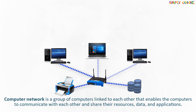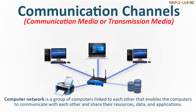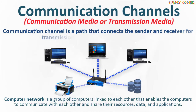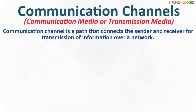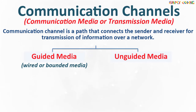These computers are linked to each other with different types of communication channels. These communication channels are also known as communication media or transmission media, and it is a path that connects the sender and receiver for transmission of information over a network. At a broad level, communication channels are divided into two types: guided media and unguided media. Guided media is also known as wired or bounded media because the data signals are enclosed in a cabling media.